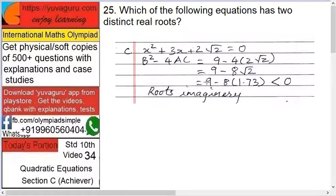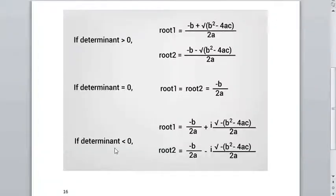.73. So 9 - 8 into 1.73. Now 8 into 1.73 will be definitely bigger than 9, so that's why this answer will be definitely minus, which is less than 0. Therefore the roots are imaginary.